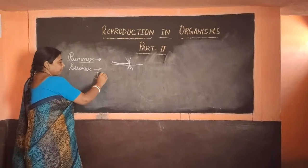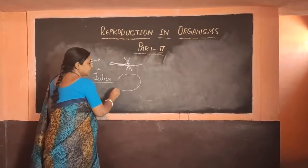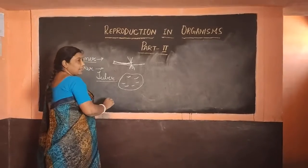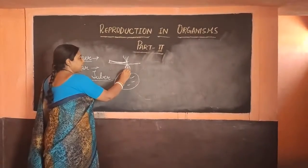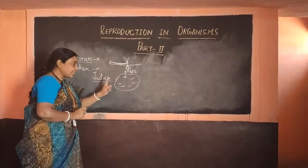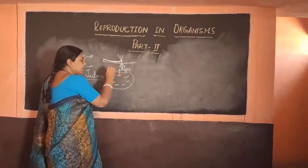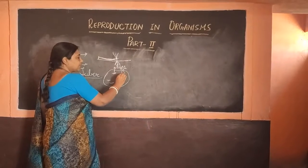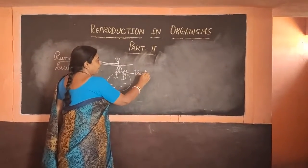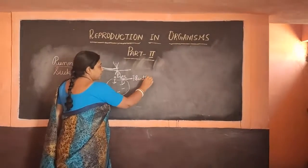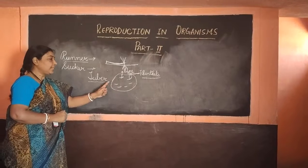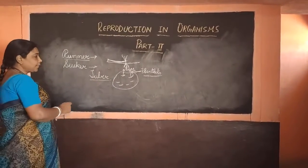In the case of tuber, you are all very well acquainted with the potato. You see certain depressions or marks in the potato — in lower classes we have told you these are called eyes. The potato is a modified stem, and buds come out from this region, which are ultimately responsible for the formation of new plants — the plantlets.